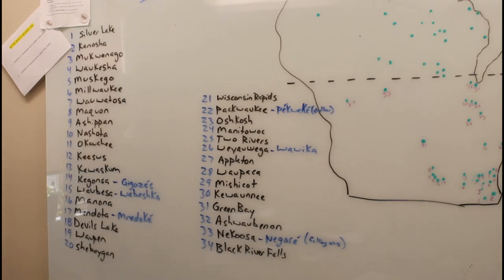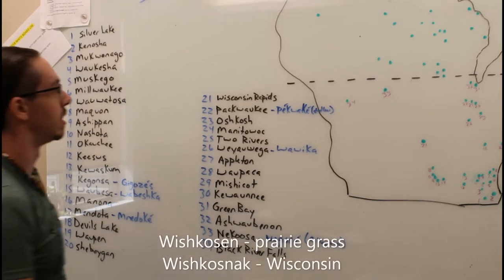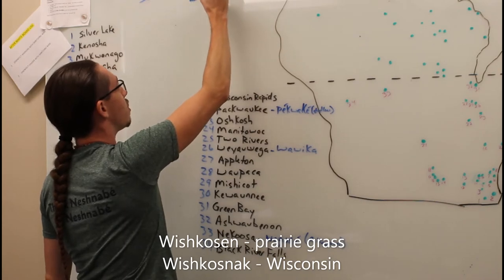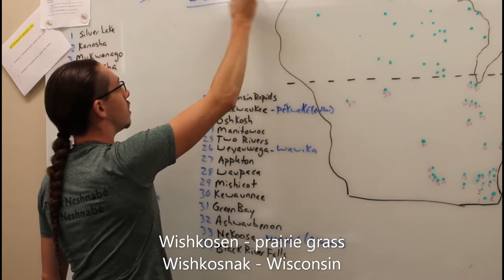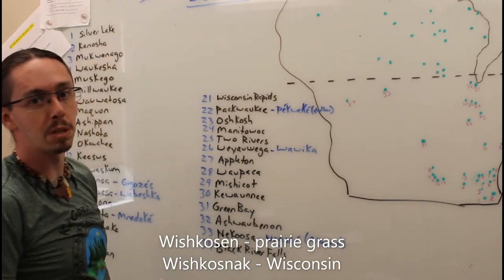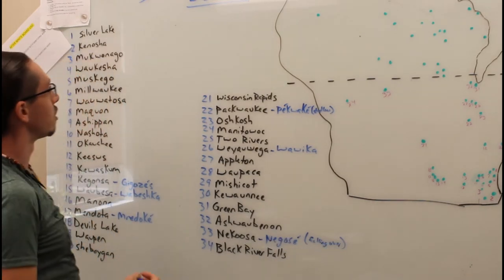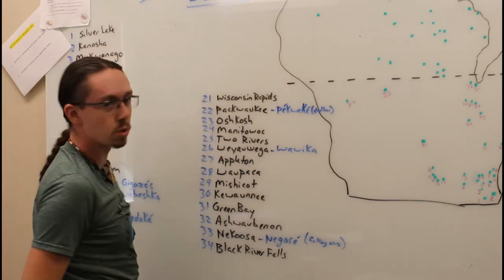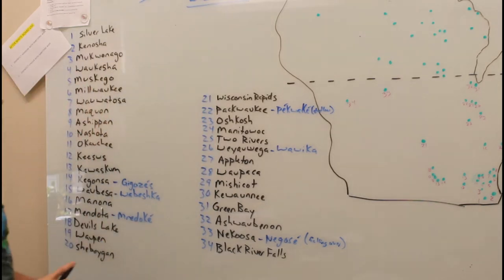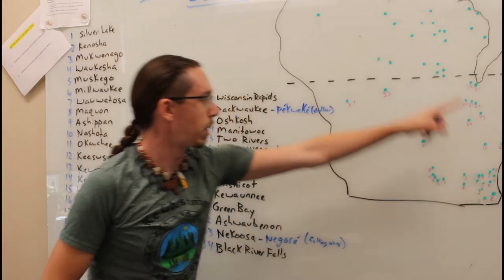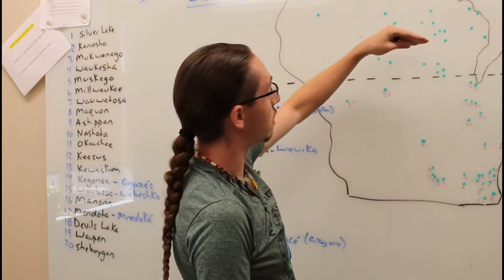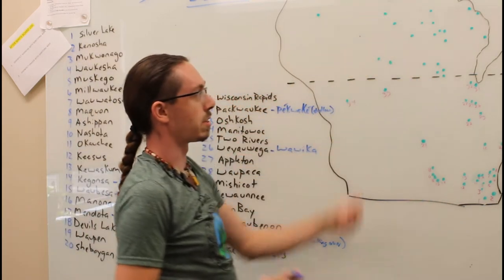So today we're going to talk a little bit about Wisconsin. Wisconsin actually comes from our word Wishkosin, which means prairie grass. So it was the original grass that inhabited our areas. Wishkosinak is a place of the prairie grass. We're going to start down here and work our way up. This video is going to be the southern half of Wisconsin. We're going to wait for another video for the top half so it's not too long.